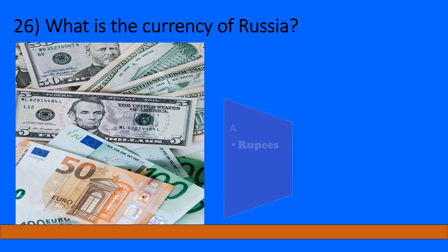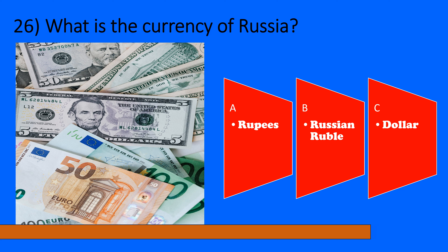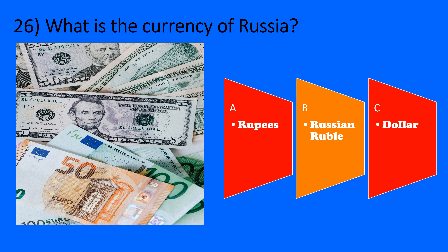What is the currency of Russia? A: Rupees, B: Russian Ruble, C: Dollar. The correct option is B, Russian Ruble.